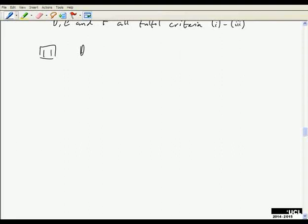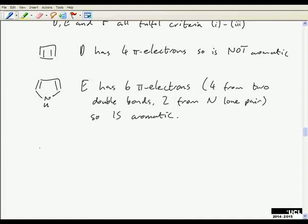d has 4 pi electrons from two double bonds, so is not aromatic. Compound e, which is pyrrole, has 6 pi electrons, but you need to tell me a bit more about why that's 6. So if you just say 4 from 2 double bonds and 2 from the nitrogen lone pair, then that one is aromatic.